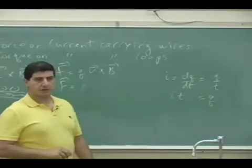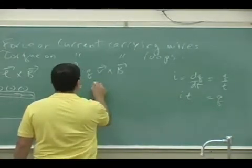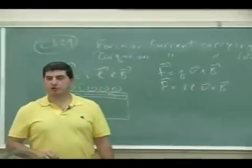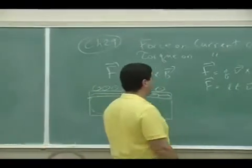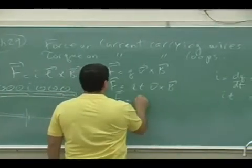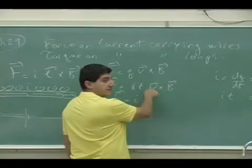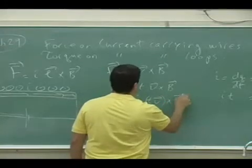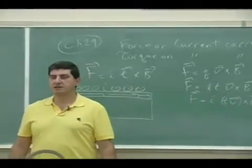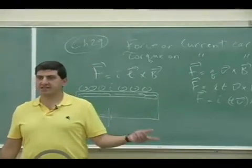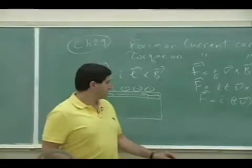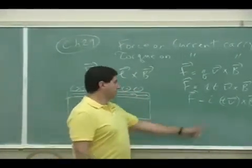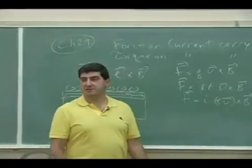So I have f equals it. So I'm showing you the derivation of the IL cross into B formula, and then you can take the t inside of the vector, so that's the length of the wire multiplied by the v. And then t v is the length of the wire because that's the velocity that the particles are traveling at, times the time, the unit of time that they're traveling through the wire. Well velocity times time is distance, so that's the length of the wire.